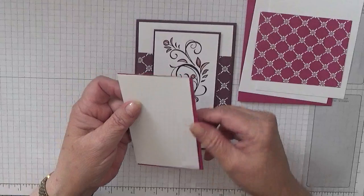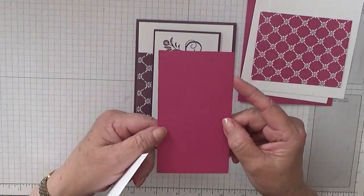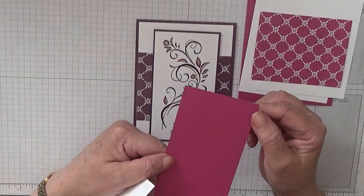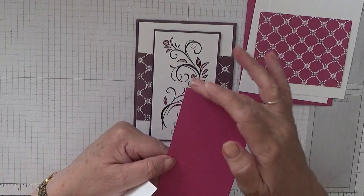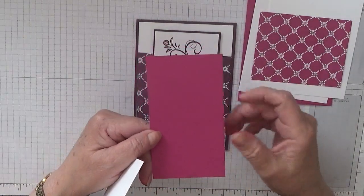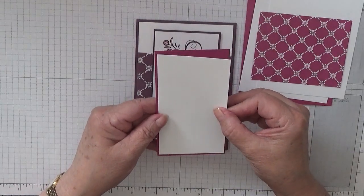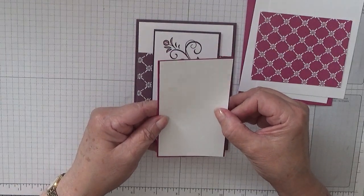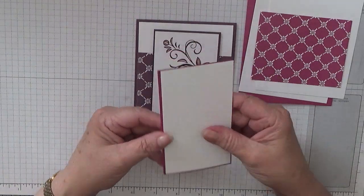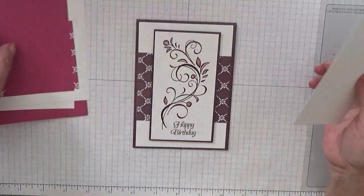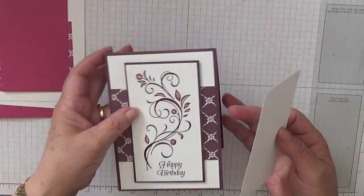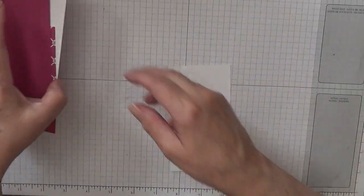I have a piece of Berry Burst at 2 and three-quarters by 5 inches, and a piece of white at 2 and five-eighths by 4 and seven-eighths. So just stamp on this, and we want the inside there as well because I did do a little bit of stamping on that.